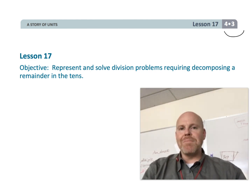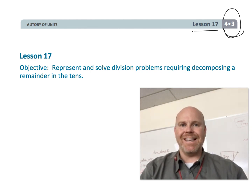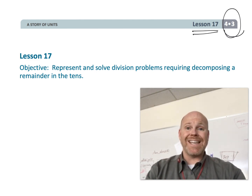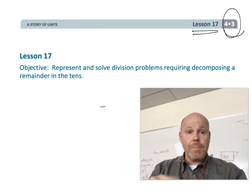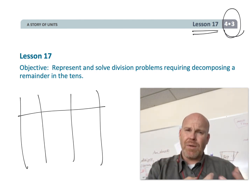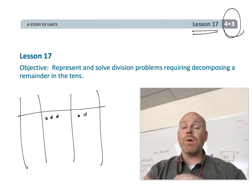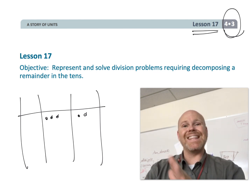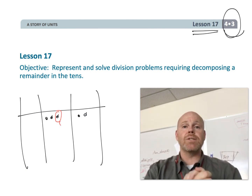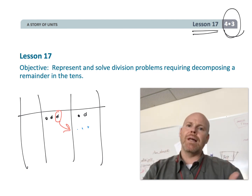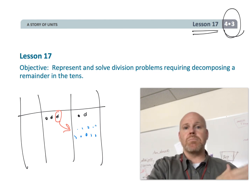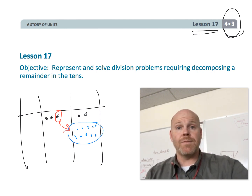This is fourth grade module 3 lesson 17. Students are going to continue using that place value technique in the place value chart, sorting their numbers to represent the traditional division algorithm. What's different in this lesson is we're going to have some remainders in the tens column that will be decomposed into the ones column — just adding one level of complexity as students march towards learning the standard algorithm of division.